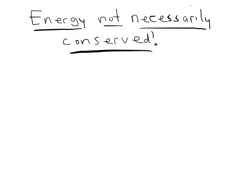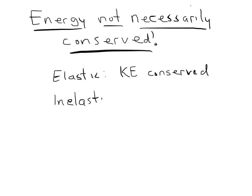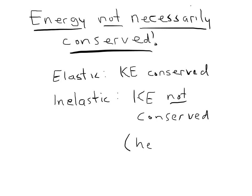Energy, however, is not necessarily conserved. If it is conserved, then it's called an elastic collision — that's when kinetic energy is perfectly conserved. If it's not, it's called an inelastic collision, meaning kinetic energy is not conserved. Where does the energy go? It goes into heat and sound. The total energy is conserved, but the kinetic energy is not, because it gets transformed into other forms. In an elastic collision, both kinetic energy and momentum are conserved. In an inelastic collision, kinetic energy is not conserved, and only momentum is conserved.